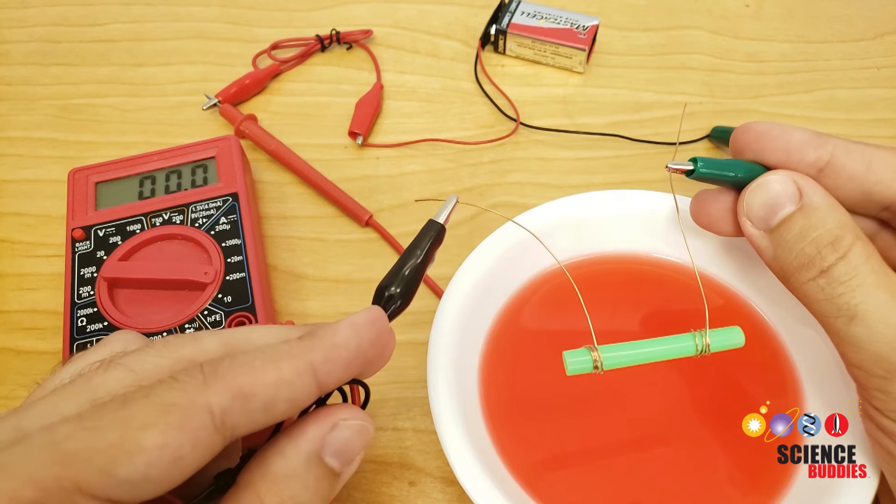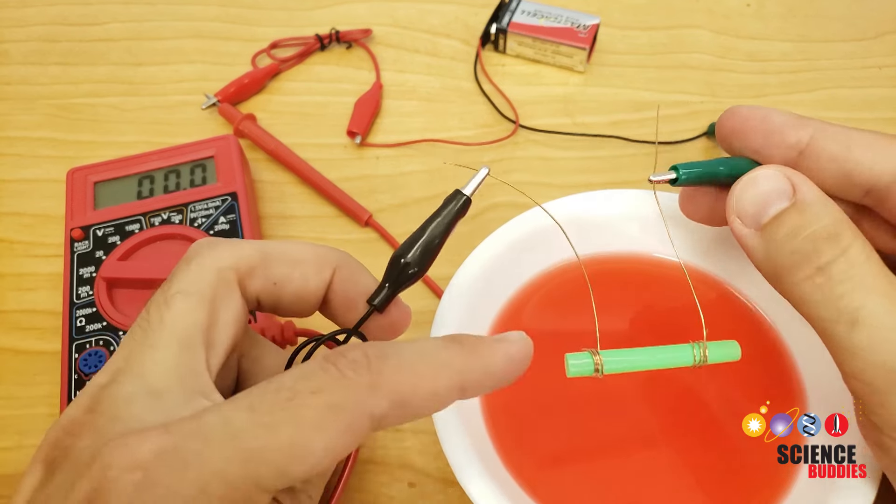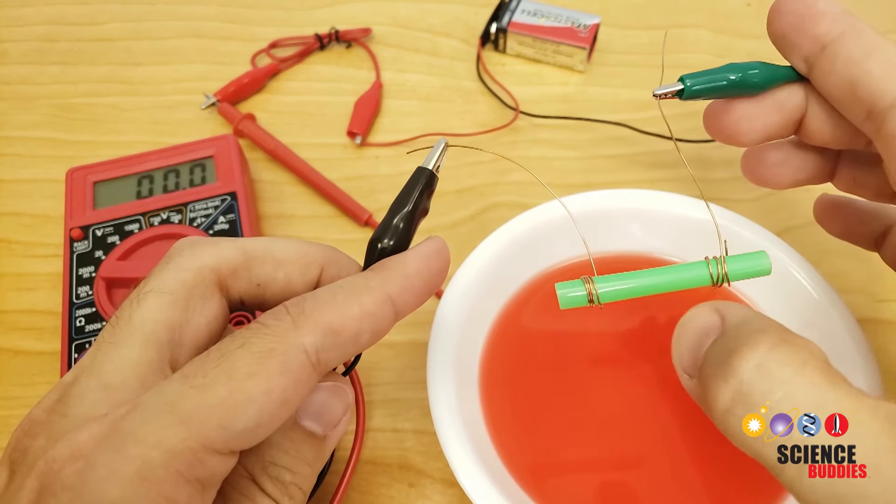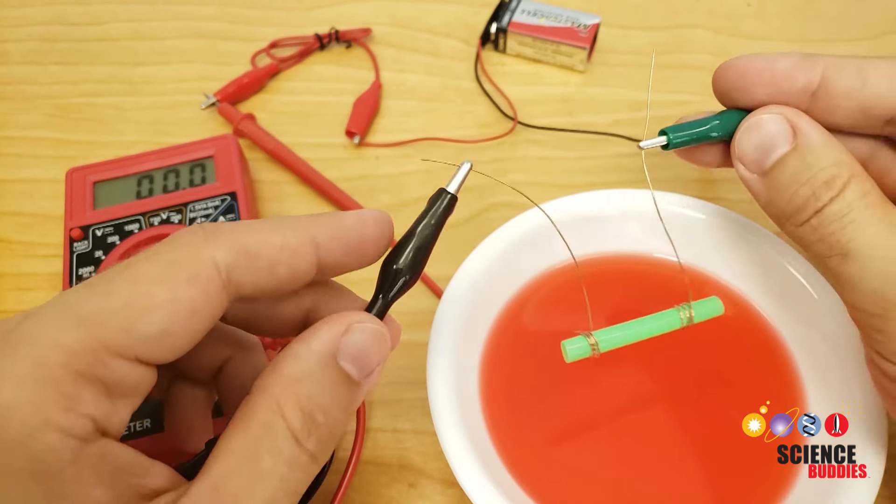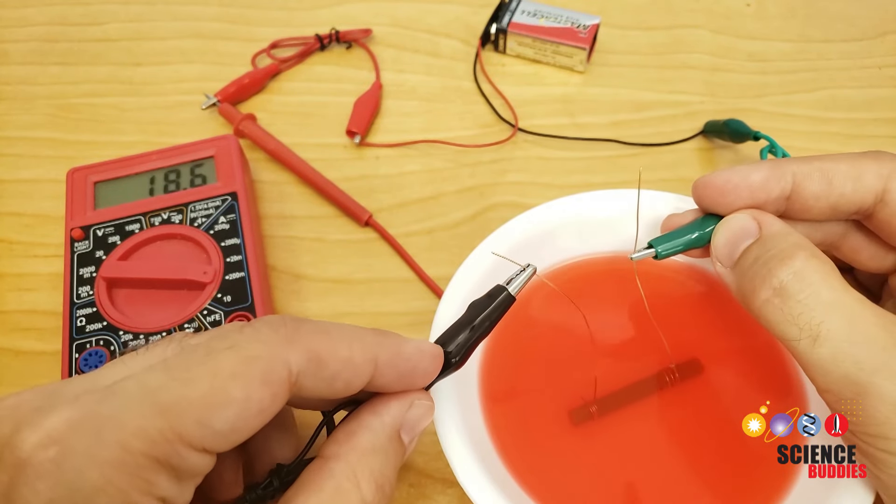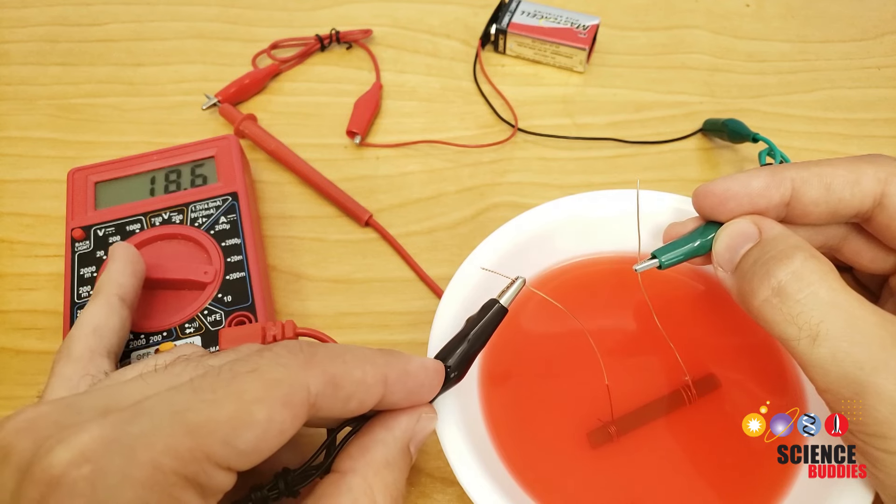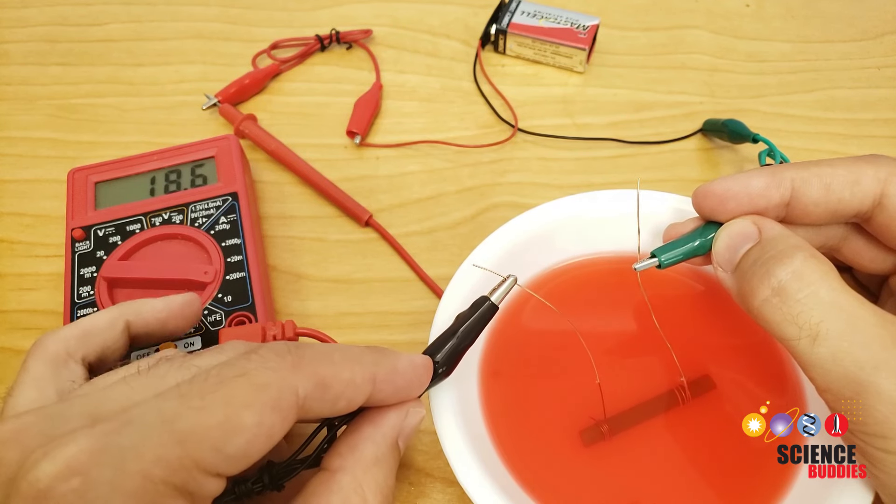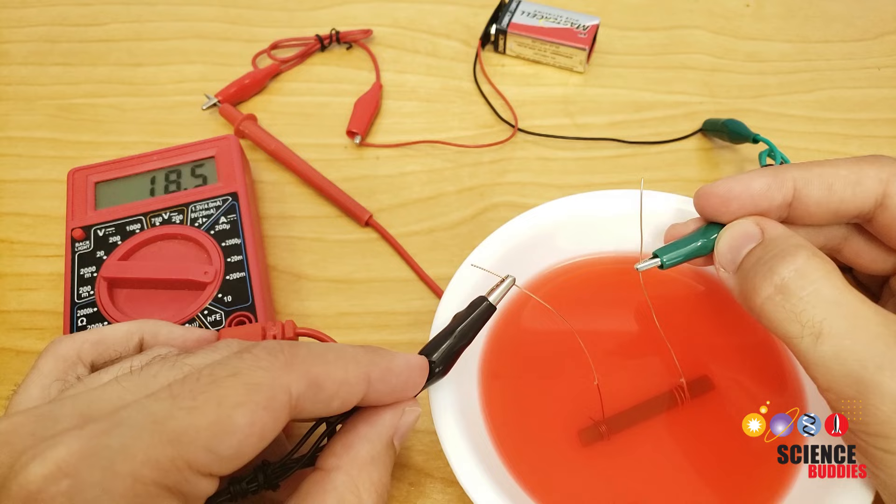So you can see that when I have the conductivity sensor in air here, there is nearly infinite resistance between the two ends of the sensor, so there is no current flowing. But when I immerse it in a liquid, my multimeter reading changes and I am now measuring about 18 milliamps of current flowing through the circuit.